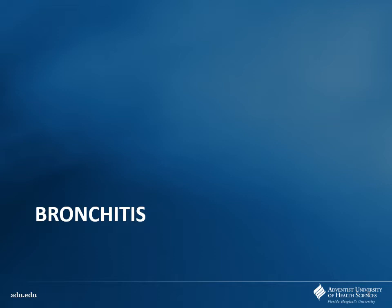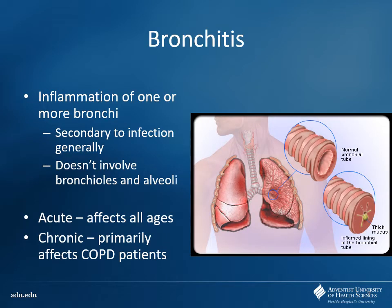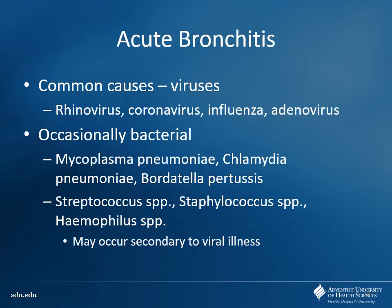With bronchitis, what's the primary cause in a lot of cases? Viral — so very frequently you do not need to treat with antibiotics. Especially with acute bronchitis, it tends to affect all ages pretty evenly. However, when we talk about COPD you have chronic bronchitis that can develop, more related to smokers. If it is going to be bacterial, we're going to see a few more atypical bugs are going to be present, things like mycoplasma or chlamydia. We also see strep pneumo, staphylococcal species, and H. flu.